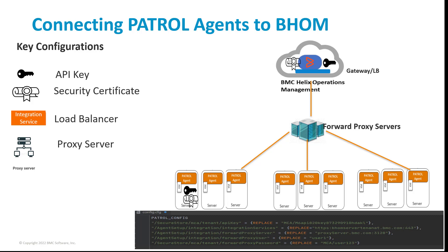Let's discuss the configurations required to add or update at the agent side to control the connection behavior between PATROL agent and BHOM. The first important configuration is the API key. An API key is a unique identification used by BHOM for authentication. With the help of the BHOM API key, the PATROL agent can get authenticated, allowing an encoded connection request to BHOM. The key is bound to a specific instance, meaning the key will vary for each deployment of BHOM, for example QA or production. A new configuration has been introduced at the agent side to allow the PATROL agent to make a request to BHOM using the API key, and the API key will be stored in encrypted format in the agent configuration.